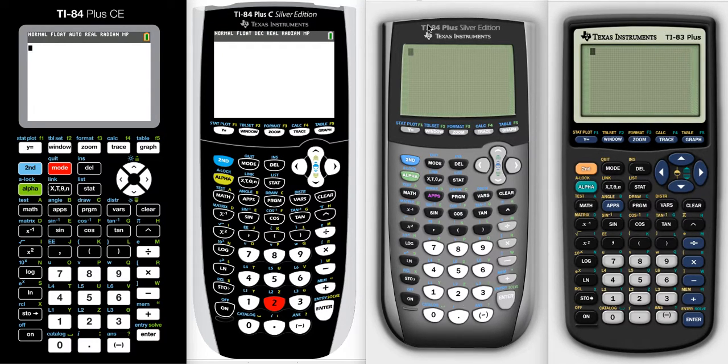The TI-83, the 84 plus silver edition, and the 84 plus C silver edition, the color version. All three of those are going to run the exact same way. The only thing that will be a little bit different will be your TI-84 plus CE. Program runs just a little bit differently.